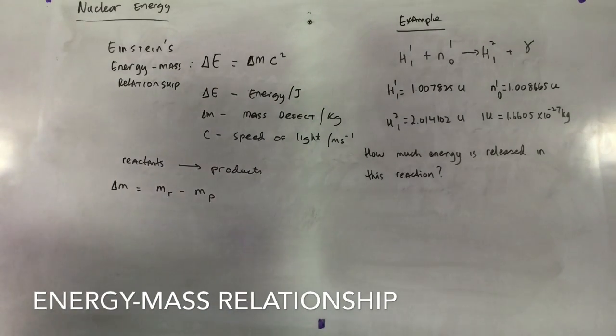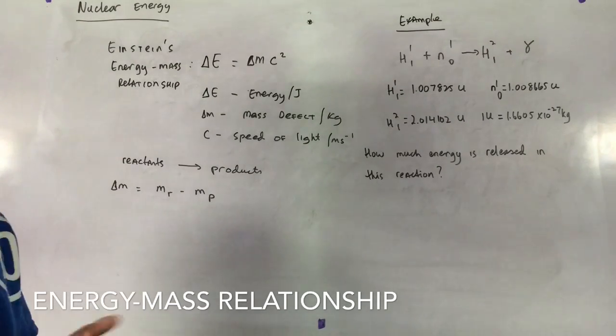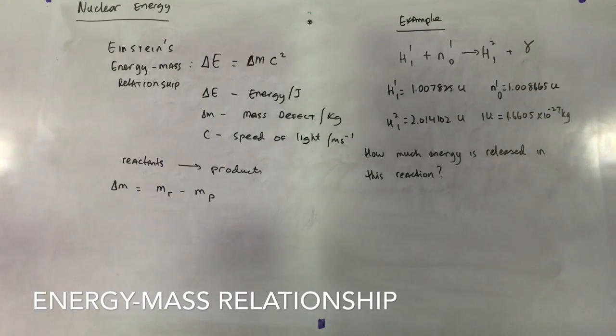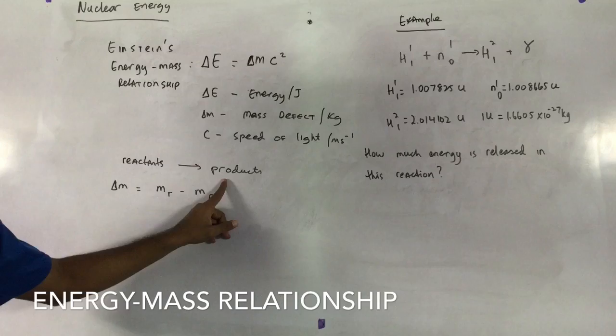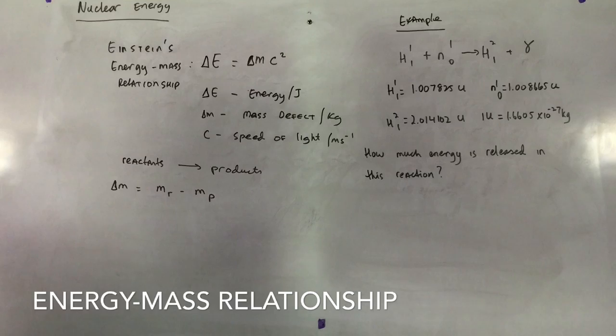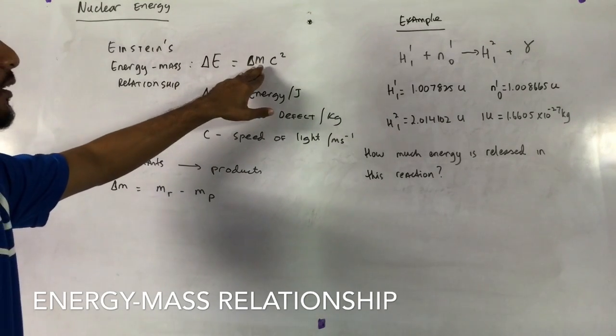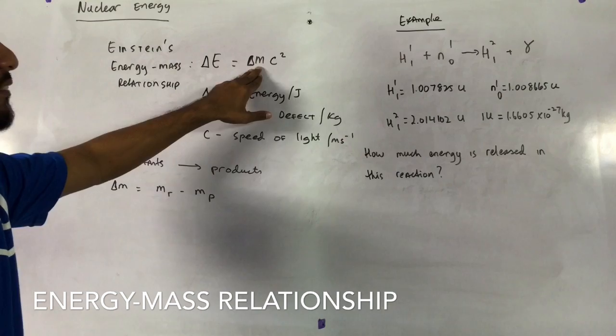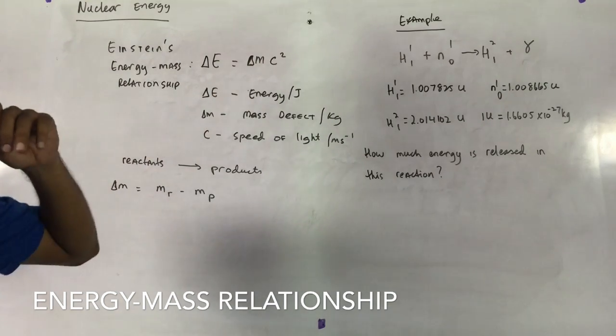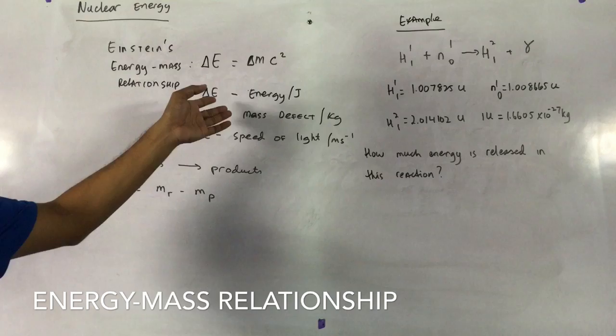So what Einstein was able to discover was that during a basic reaction between reactants forming products, that change in mass that occurs from reactants to products results in energy. He was able to work it out. So here's all we have. We have here that energy is equal to the change in mass, called the mass defect, by the speed of light squared. So this was known as the energy-mass relationship.